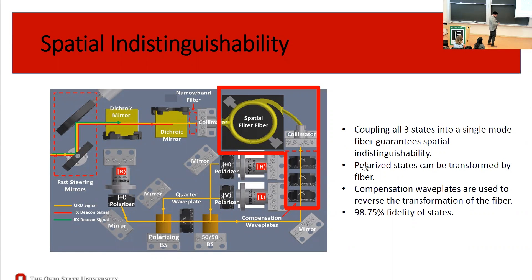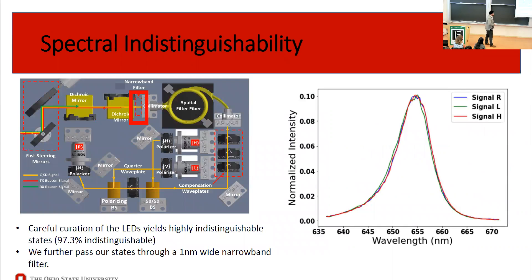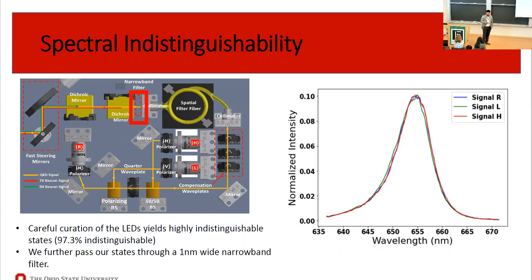For spectral indistinguishability, we carefully select our LEDs. As shown in this plot, the three LEDs are already 97.3% spectrally indistinguishable. We further pass the light through a 1-nanometer narrowband filter, which improves indistinguishability even further. More details on the indistinguishability of states in our system will be presented by my colleague Roddy Cochran in the poster session.